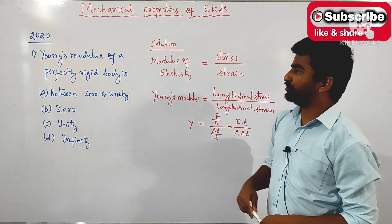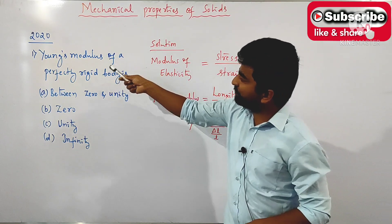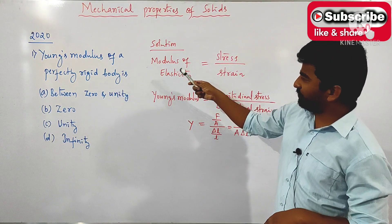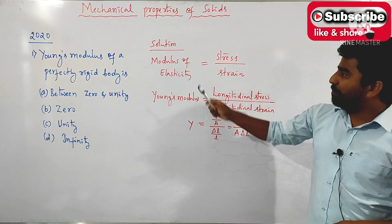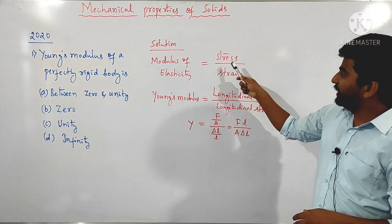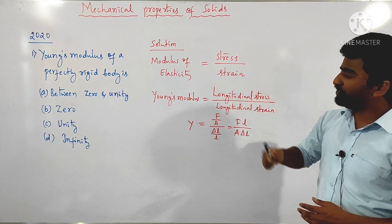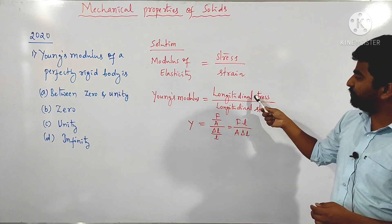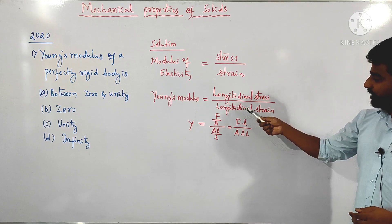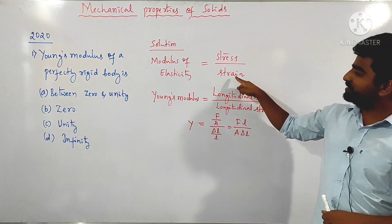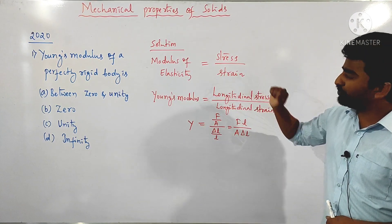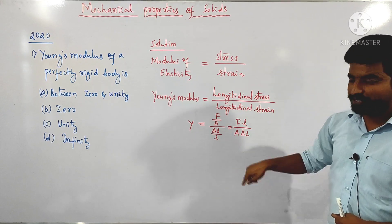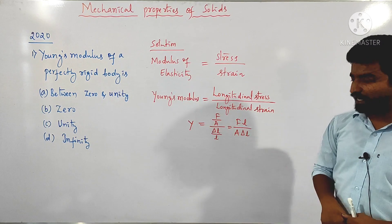Let's move on to the first question asked in 2020. Young's modulus of a perfectly rigid body is — they are given four options. First of all, Young's modulus of elasticity is the ratio of stress divided by strain. Specifically, Young's modulus is the ratio of longitudinal stress to the longitudinal strain. Longitudinal stress is nothing but the normal stress — force divided by area.